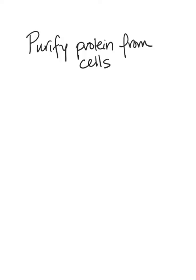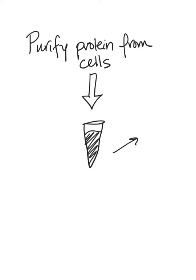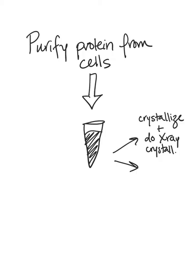When you purify protein from cells there's a lot of stuff you can do with it. The goal is that you acknowledge there are so many proteins in any given cell, and you want to make sure that you have a sample that's just going to be your protein and nothing else. Then you could take that and maybe crystallize it and do x-ray crystallography, or do other experiments where you look at how the protein binds DNA or catalyzes a reaction. But to study a protein you have to make sure that you have a sample that's pure — just your protein of interest.